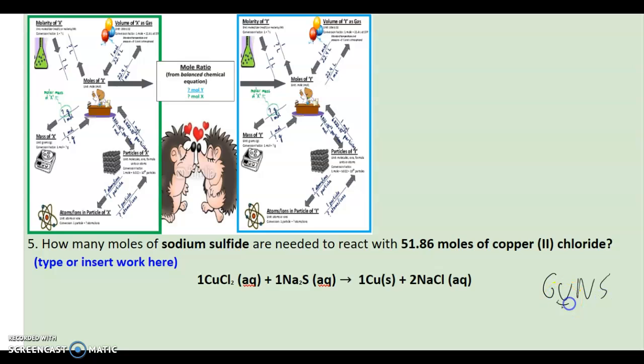Givens under one. Givens, write down my givens, put a one underneath it, get the rest of my numbers, and solve. So my first given is 51.86 moles of copper chloride.